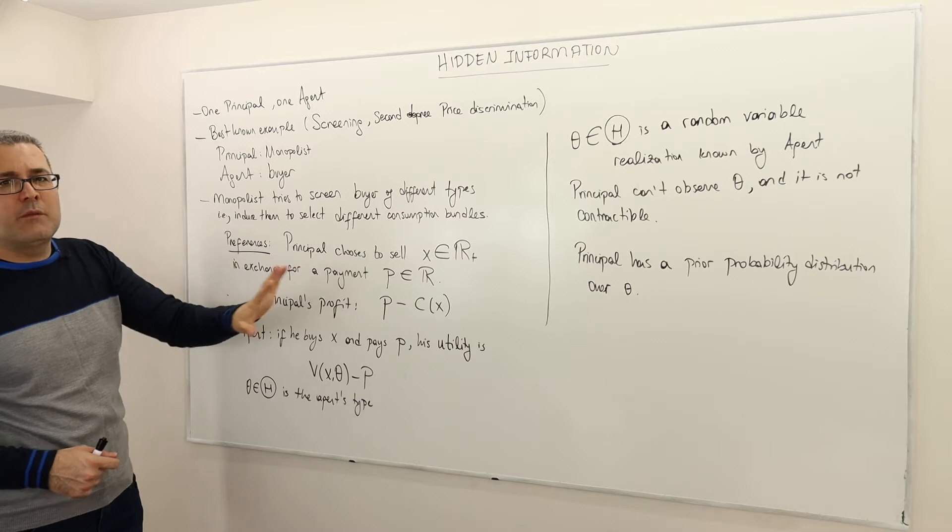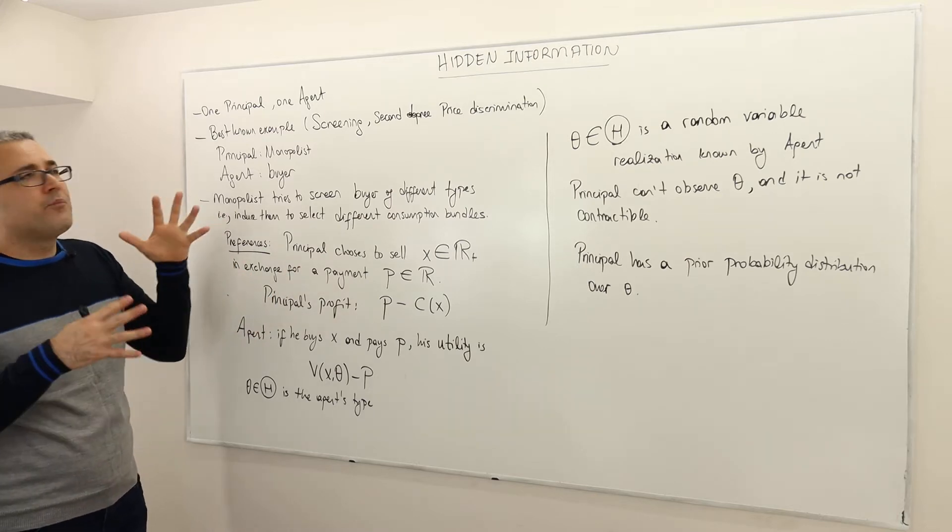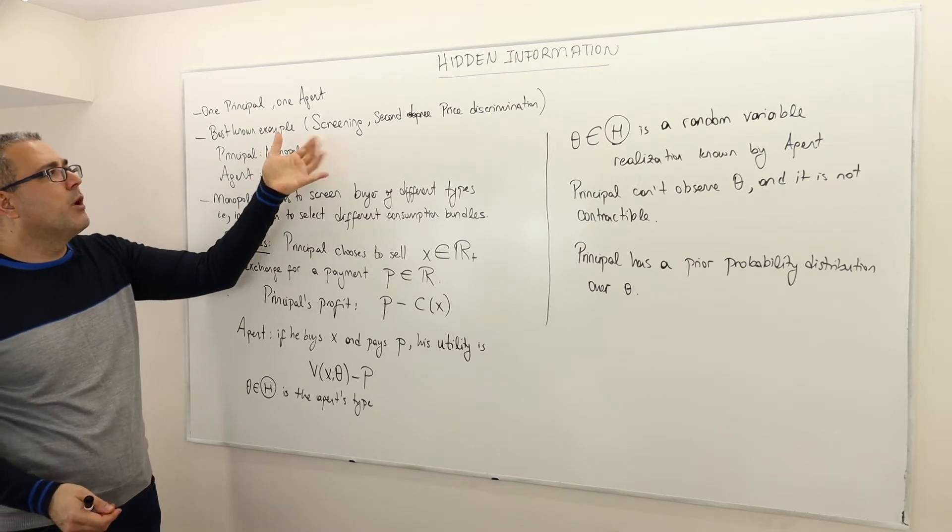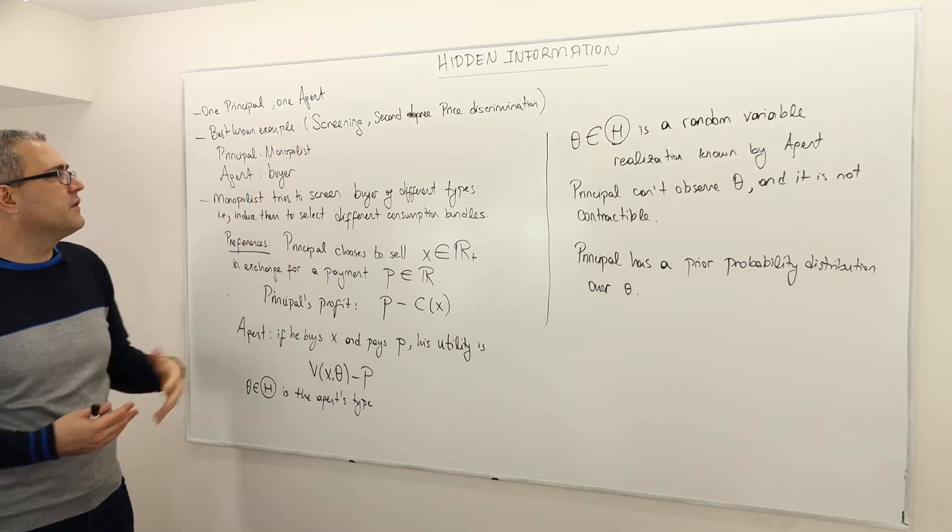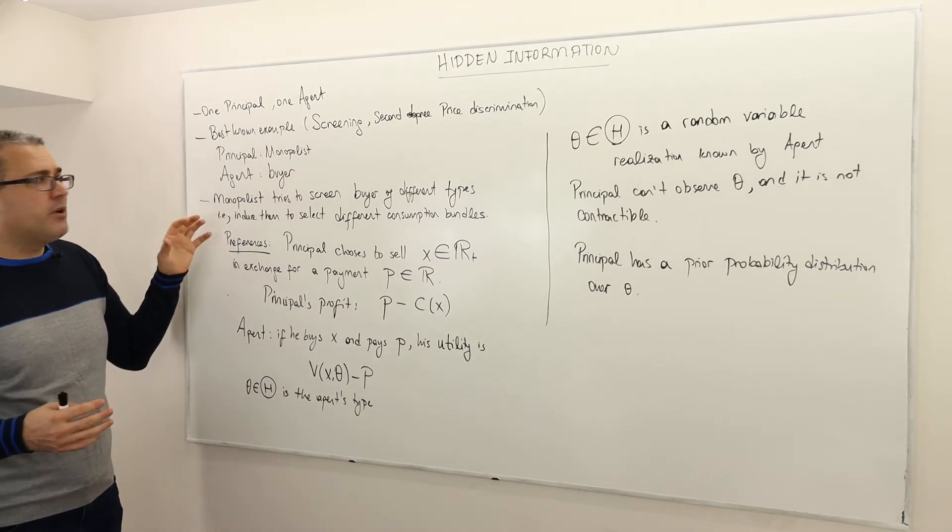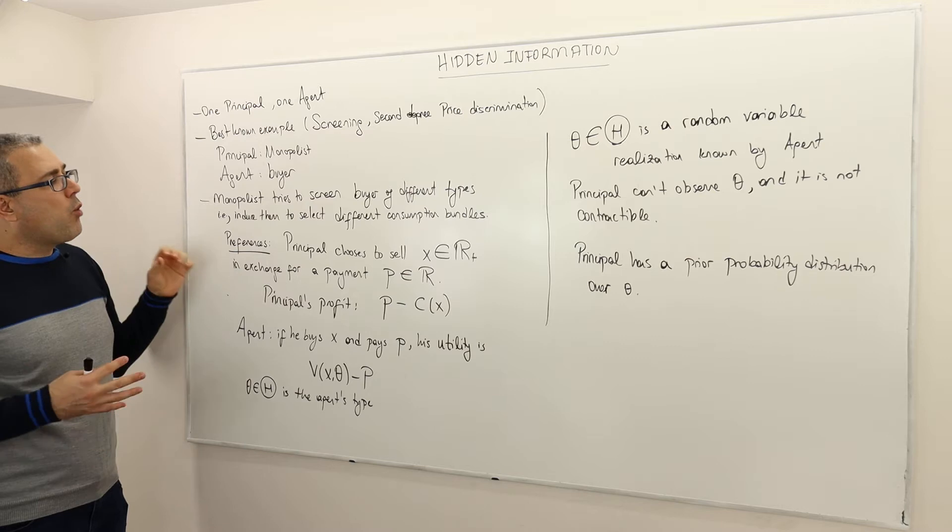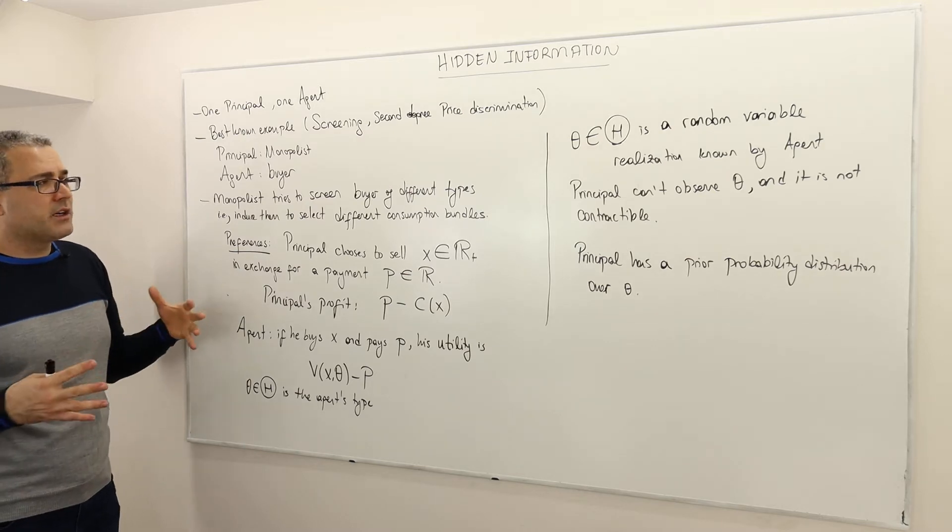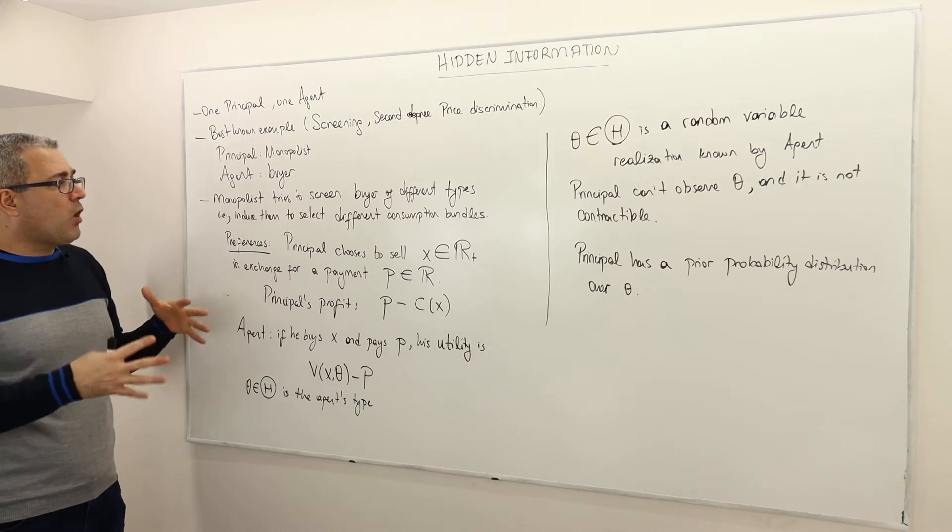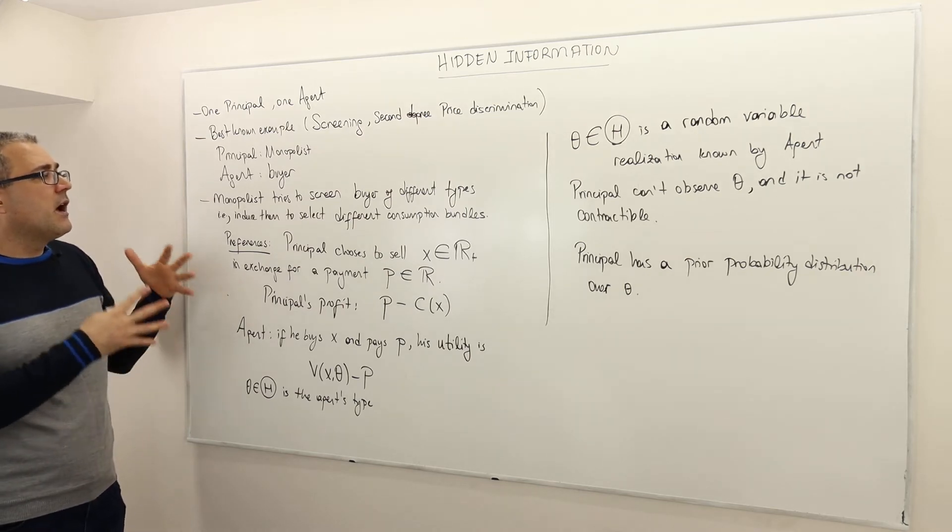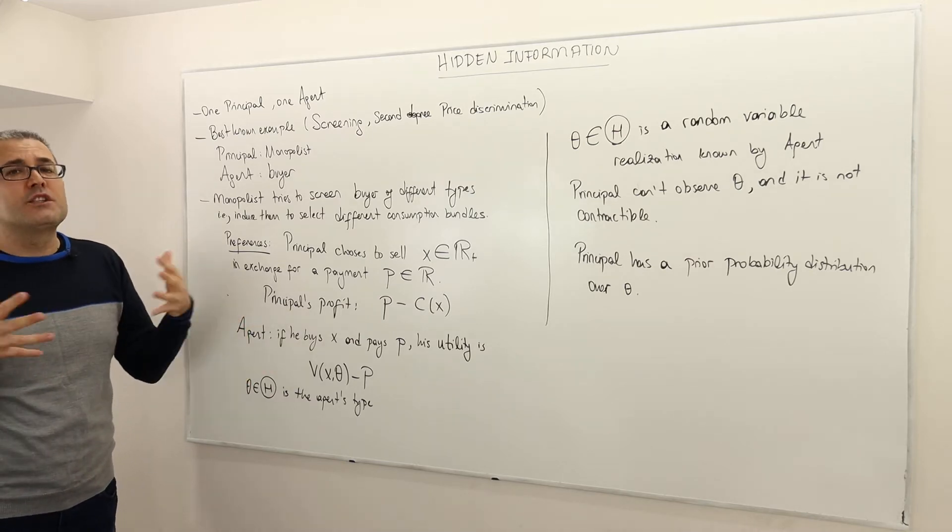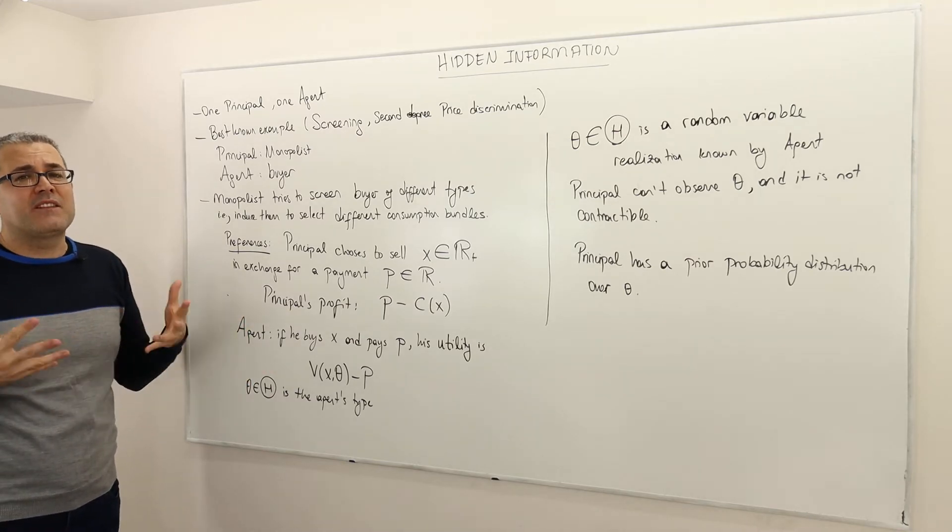So once again, this hidden information principal-agent model, also known as screening problem or second-degree price discrimination. What happens is that the monopolist, the seller or the principal, wants to screen the buyer of different types, meaning the monopolist wants different types of buyers to buy different consumption bundles so that the monopolist can maximize its profit.